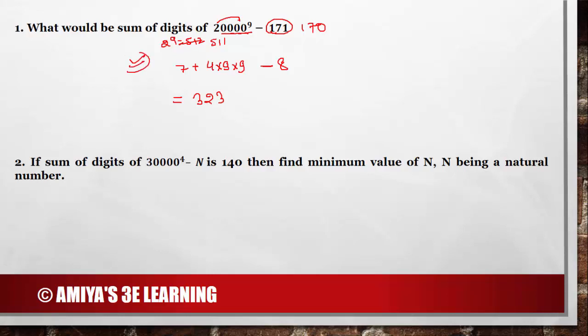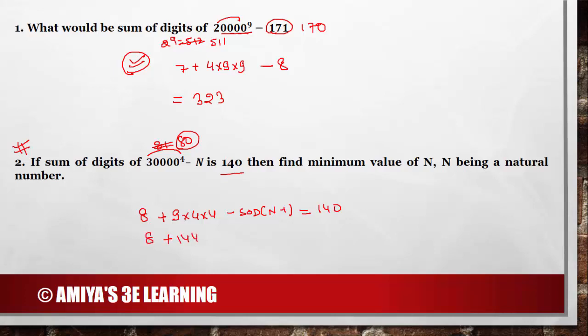Even you can solve this question in the conventional method, but with our formula it would be the easiest method. Now we have this second question and we need to find n. So we can say 3 raised to power 4 is 81. We are working on 80, and summation of digit is 8. Plus 9 into base zeros — 1, 2, 3, 4 into 4 — minus sum of digits of n minus 1 is equal to 140 according to the question. We have 8 plus 144 minus summation of digits of n minus 1 equals 140, so summation of digits of n minus 1 should be 12, and we want the minimum value.